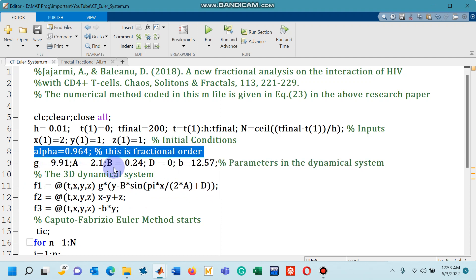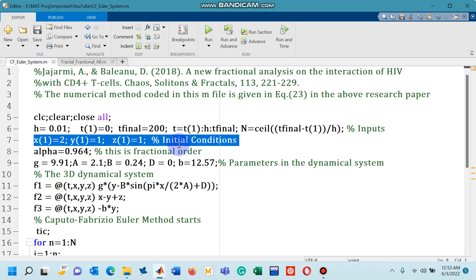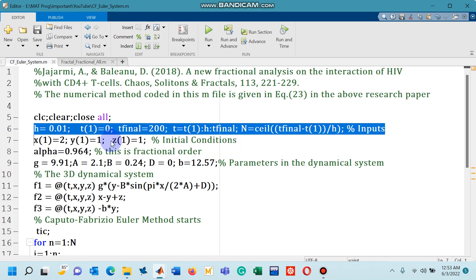Likewise I have chosen the arbitrary value of the fractional order alpha and once again arbitrarily chosen initial conditions and these are some required inputs given on line number 6. The step size h, the initial value for the independent variable t of 1 is 0. The final mesh point I have chosen as 200, integration interval is shown by t and capital N shows the number of iterations.